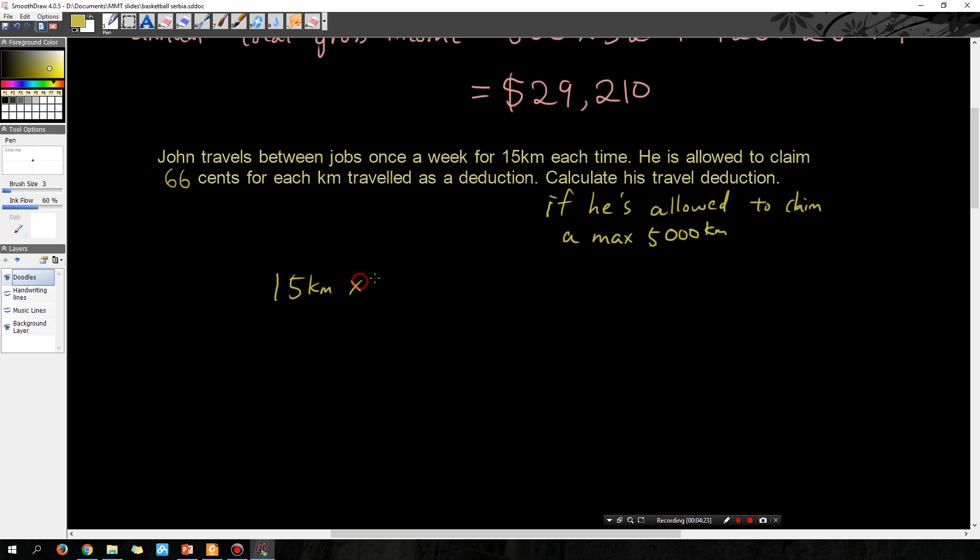So 15 kilometers per week, there are 52 weeks, so that is 780 kilometers. That's nowhere near 5,000, so don't even worry about the 5,000.